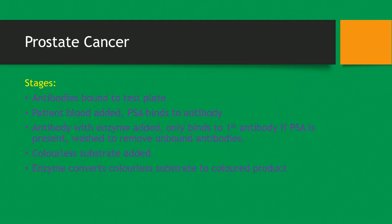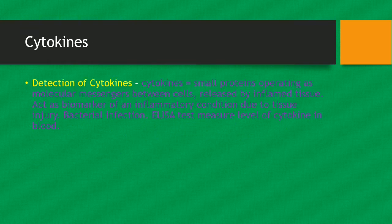A colourless substrate is then added, and the enzyme converts the colourless substrate to a coloured product, indicating a positive result. ELISA can also be used to detect cytokines, which are small proteins that act as molecular messengers between cells and are released by inflamed tissue. Cytokines are biomarkers often associated with inflammatory conditions due to tissue injury or bacterial infection, and the ELISA test measures the level of cytokine in the blood. Thank you for watching — we have now finished immunity and I'll see you next time.